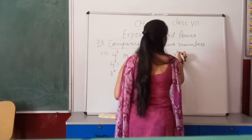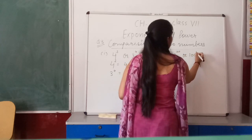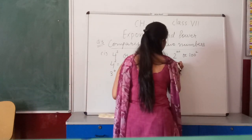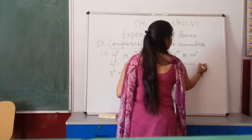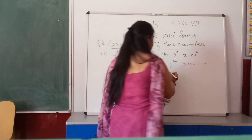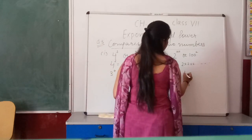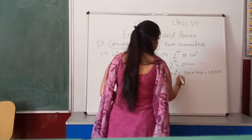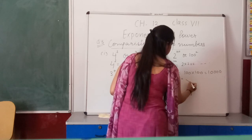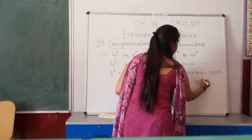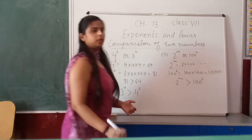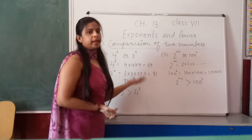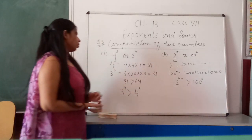Second part: if we have 2 raised to power 100 or 100 raised to power 2. Now 100² = 100 × 100 = 10,000. And 2 raised to power 100 is far larger than that. So 2 raised to power 100 is greater than 100 raised to power 2. This is comparison between two numbers.